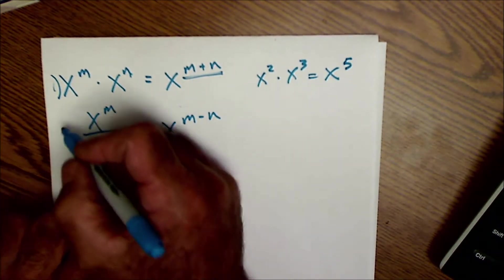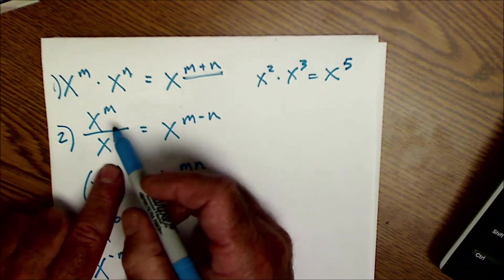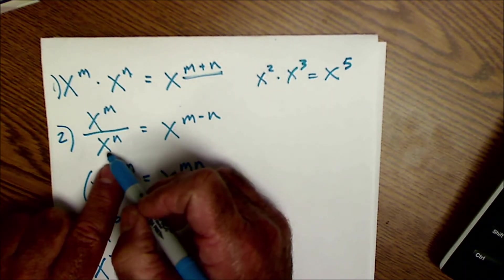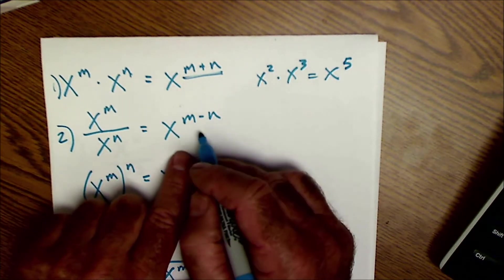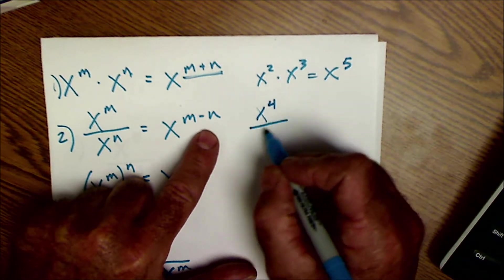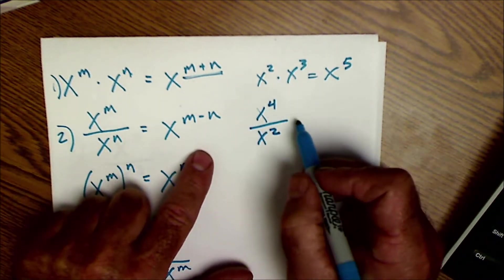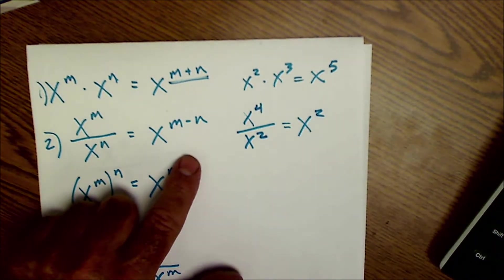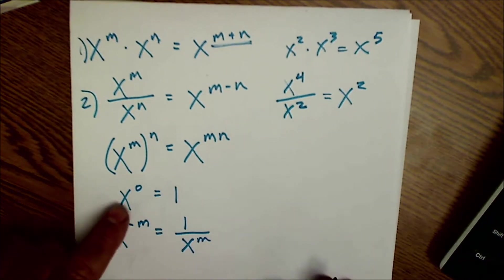The quotient rule of exponents: quotient's division, x to the m divided by x to the n. So again, the bases are the same, I subtract the exponents. So if I had x to the fourth over x squared, I would keep that same base of x and I do 4 minus 2 to get x squared. We're just simplifying exponents here.